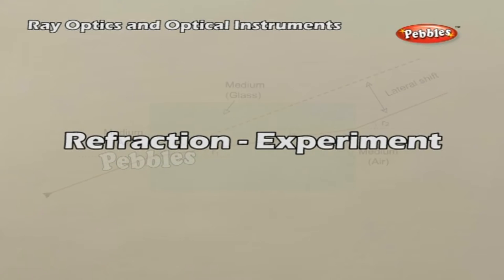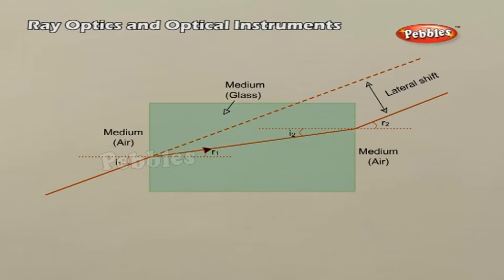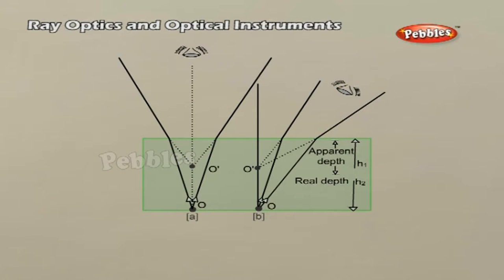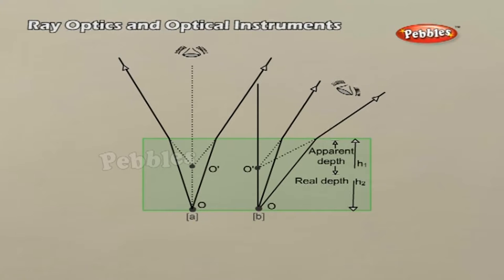Refraction Experiment. For a rectangular slab, refraction takes place at two interfaces. It is easily seen from the figure that r₂ equals i₁; that is, the emergent ray is parallel to the incident ray. There is no deviation, but it does suffer lateral displacement or shift with respect to the incident ray. Another familiar observation is that the bottom of a tank filled with water appears to be raised when viewed near the normal direction. It can be shown that the apparent depth H₁ equals the real depth H₂ divided by the refractive index of the medium, that is, water in this case.